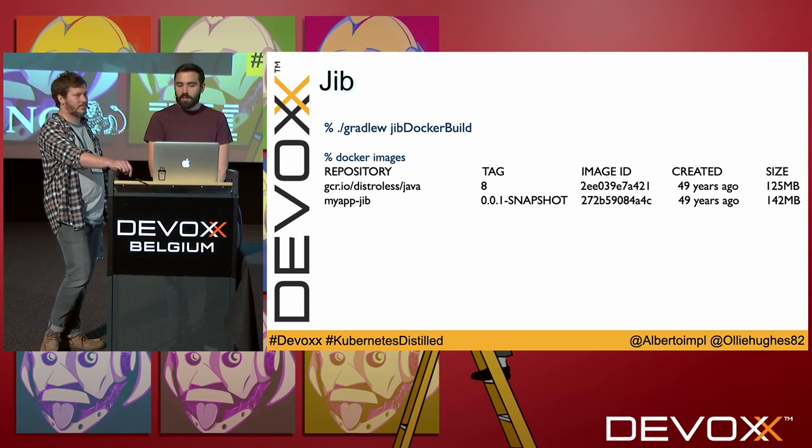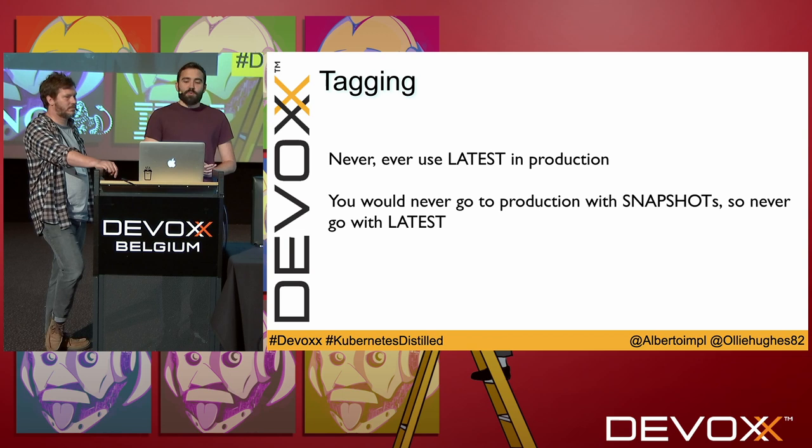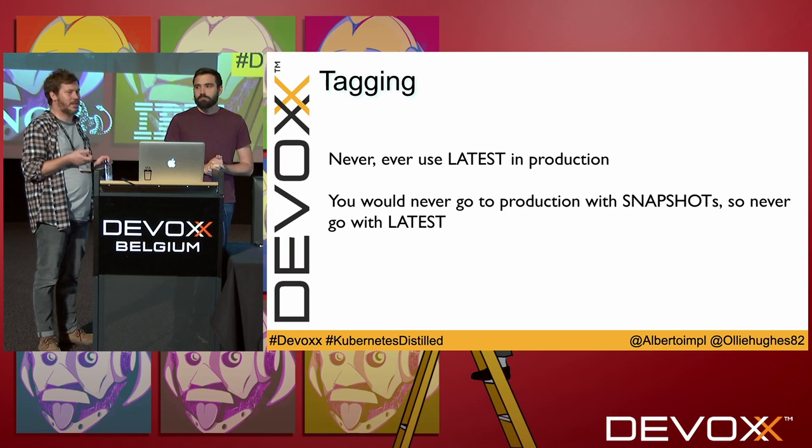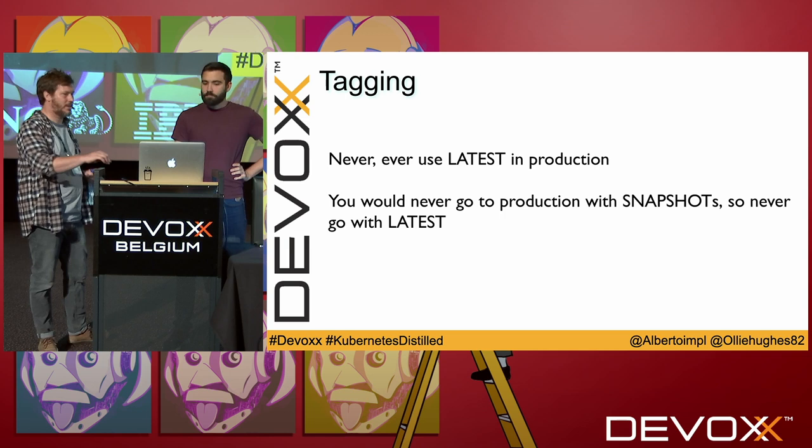We can run it locally and see that JIB uses Distroless by default. The tool is very configurable. One thing we haven't talked about is tags. The same way you'd never go to production with a snapshot in your dependencies, you'll never go with 'latest' as your tag. I kind of wish they never invented 'latest' — it provides no information at all. If you've got your app tagged as 'latest', it doesn't tell you what version it is or what dependencies it's using.